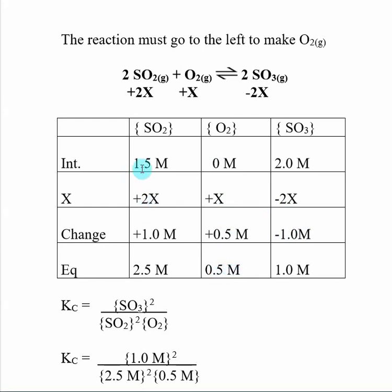Here also, I started with 1.5 molar SO2. I know I'm making 2X of that. So over here, minus 2X was minus 1.0. So I know 2X must be plus 1.0. I know that I'm making SO2. So there's a positive number here. I started with 1.5 molar. So I'm making 1.0 molar. So when I'm done, the equilibrium concentration is 2.5 molar.